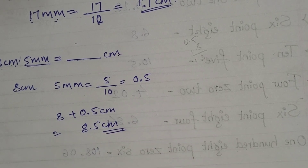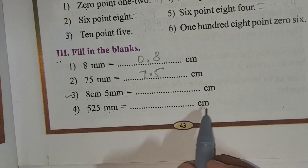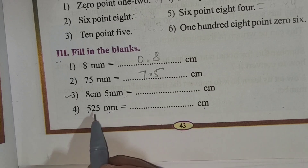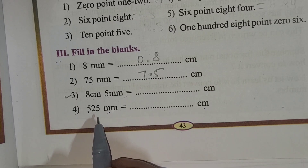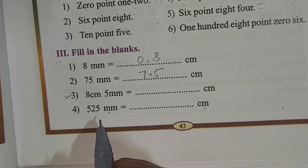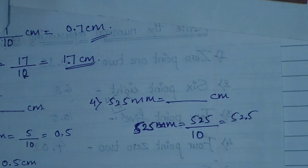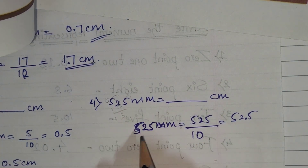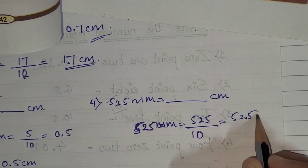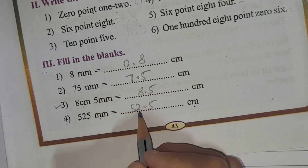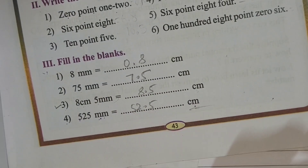Now the fourth one: 525 millimeters equals dash centimeters. Try to solve it yourself — pause the video and then check your answer with mine. The answer is 52.5 centimeters. So 52.5 centimeters is your answer.